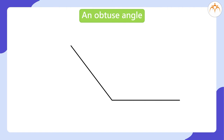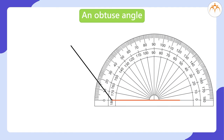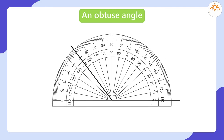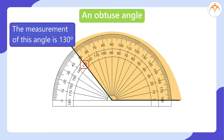An Obtuse Angle. Let us match the baseline of the protractor and the horizontal arm of the angle to each other. Match the midpoint of the protractor and the vertex of the angle to each other. Now look at the other arm of the angle — it is pointing a number on the protractor on the left side of 90. The arm of the angle aligned to the baseline extends towards the right, so you can read the measurement from the right side of the midline of the protractor. The number pointed by the arm is 130, so the measurement of this angle is 130 degrees.